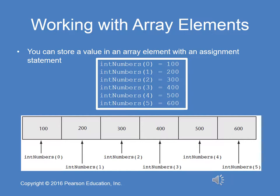And then in the diagram at the bottom of this slide, you see the result. You see the actual sequential adjacent memory locations that have now been assigned values: 100, 200, 300, 400, 500.